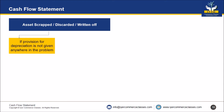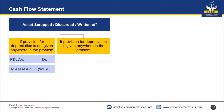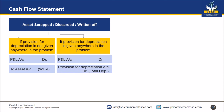Sometimes in the problem they will give you asset scrapped, discarded, or written off. If provision for depreciation is not given in the problem, entry will be: profit and loss account debit to asset account with the WDV. If provision for depreciation is given in the problem, entry will be: profit and loss account debit, provision for depreciation account debit with the total depreciation, to asset account with the cost. Remember: assets scrapped, discarded, or written off means thrown away — no cash comes in.